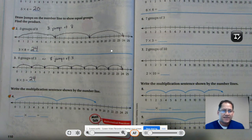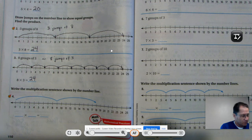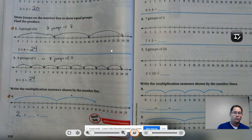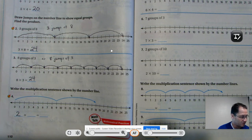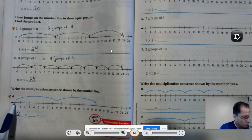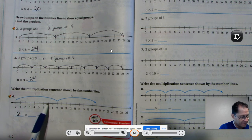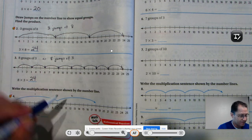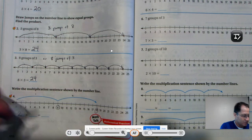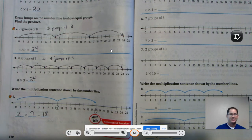Write the multiplication sentence shown by the number line. So here I see 1, 2 jumps, or 2 groups. We are going to list that first. And how much is in each group? One, two, three, four, five, six, seven, eight, nine. One, two, three, four, five, six, seven, eight, nine. So 2 times 9 equals 18.